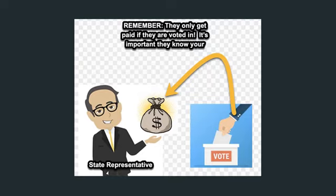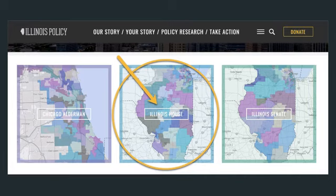It's important to know that your representative for your district gets paid by people voting for them — if they're voted in, they get the job. So it's really important that you tell them how you feel, because if your neighborhood gets really mad at them and goes against them, they won't have their job in the future. They get voted on every two years, so it's a short-term job. It's important you let them know how you feel.